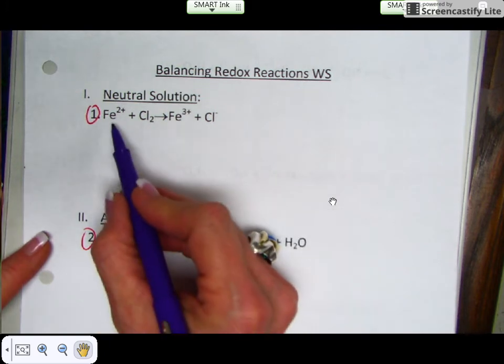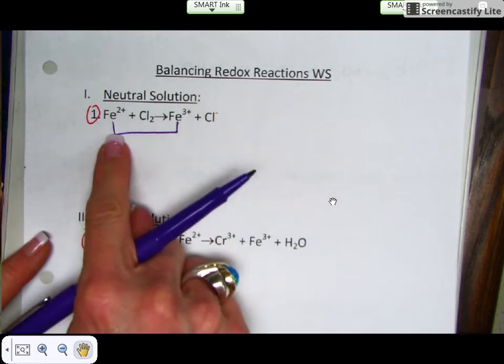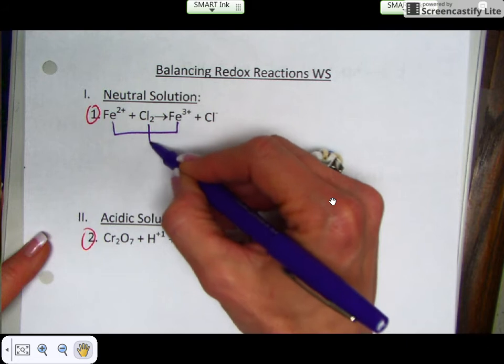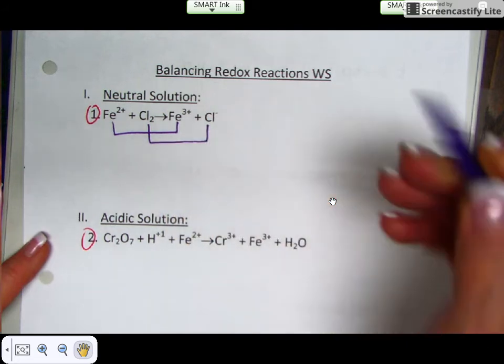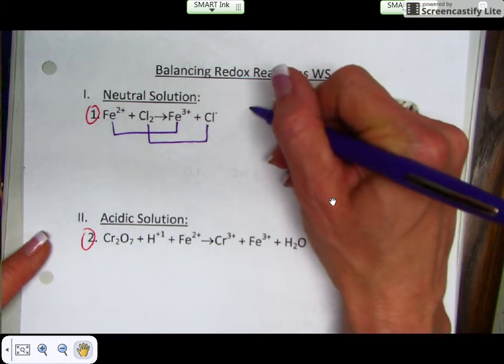So here, if you notice, from one side to the other, you can pair up iron 2 with iron 3, and you can pair up chlorine with the chloride ion. So this will enable us to get our two half reactions.